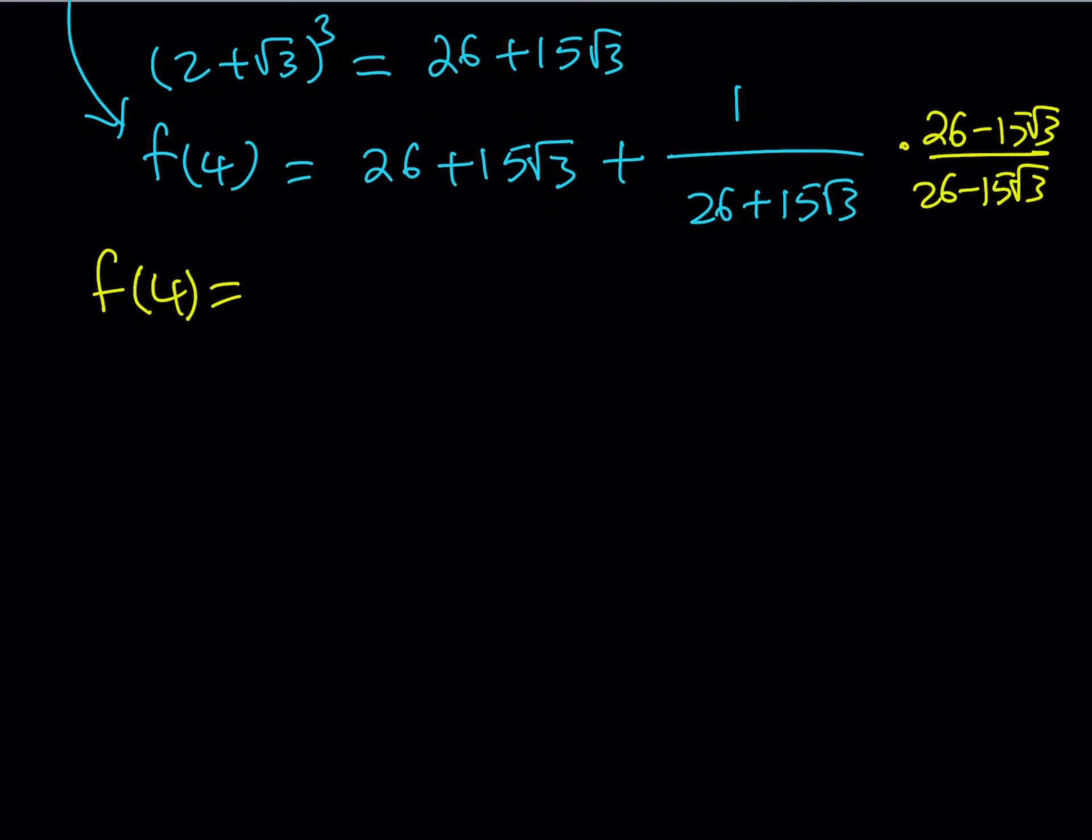f of 4 is going to equal - obviously we have the 26 plus 15 root 3, and then here 1 multiplied by that is going to be the same thing - and then it's going to be divided by 26 squared minus 15 times root 3 squared. If you square 15 root 3, you're going to get 225 times 3, which is 675. And 26 squared just happens to be 676. So their difference is 1.